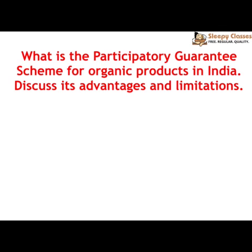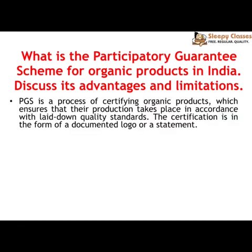The Participatory Guarantee Scheme is a process through which you certify organic products — ensuring that production has taken place in accordance with laid-down quality standards. To ensure that an agricultural product is organic, certain process standards are followed regarding quality and purity. This certification is a documented logo or statement which serves as proof of the product being organic.